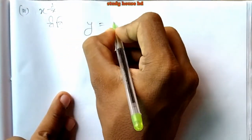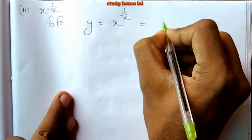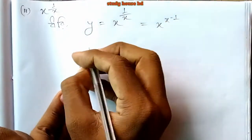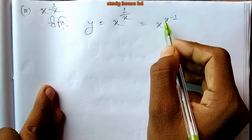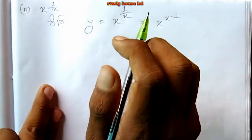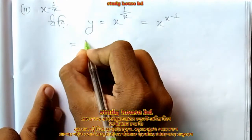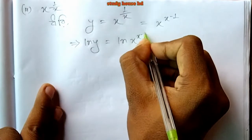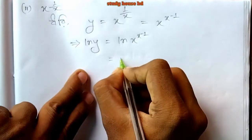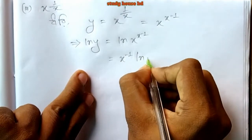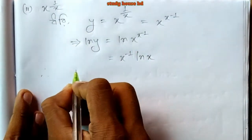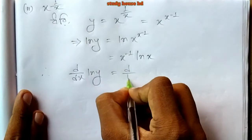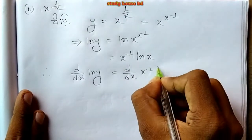Now the second problem: y equals x to the power 1/x. Taking the natural log: ln y equals (1/x) ln x. Now differentiating both sides with respect to x: d/dx of ln y equals d/dx of (1/x) times ln x.